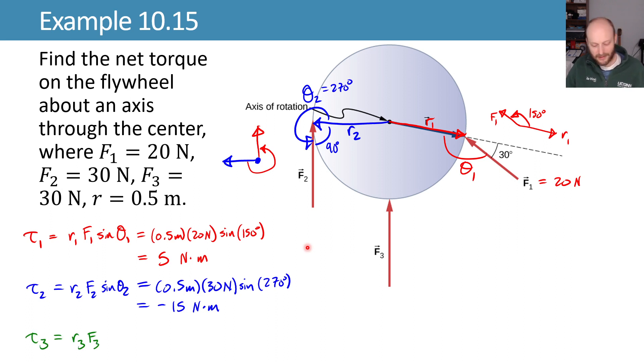Lastly, torque 3 is r₃F₃ sin θ₃. r₃ is pointing straight down. Here we notice the angle between these two is 180 degrees, so the sine of 180 degrees is zero, which means that we get zero from this. And that's because there's no perpendicular lever arm, so pushing straight on here is not going to make this want to spin at all. It makes sense.